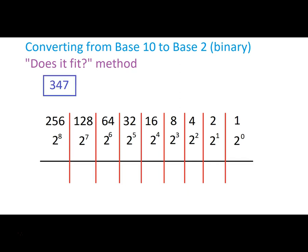The number we're going to use for this example is 347. That's the base 10 number, the one we're used to seeing most of the time in our lives. But we're going to turn this into a binary number that just has ones and zeros using the does it fit method.